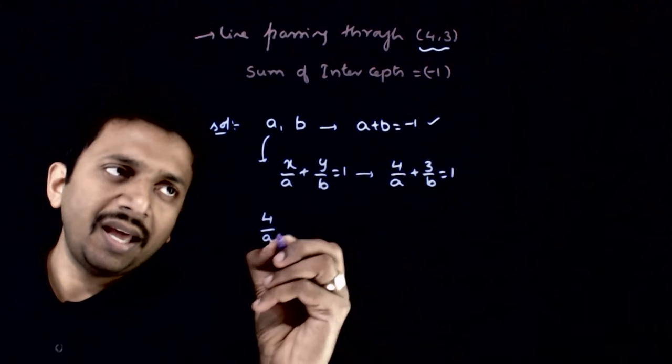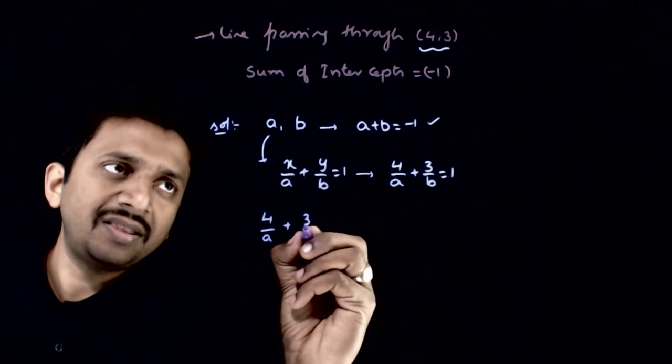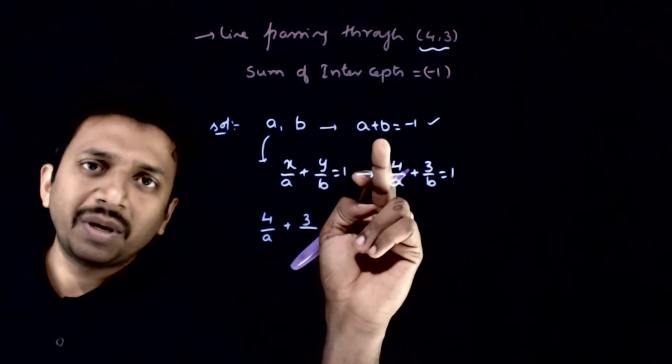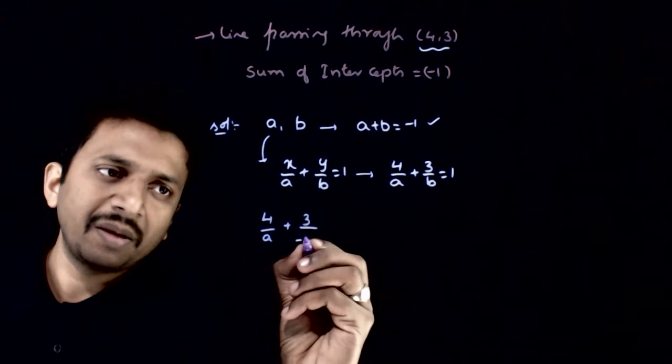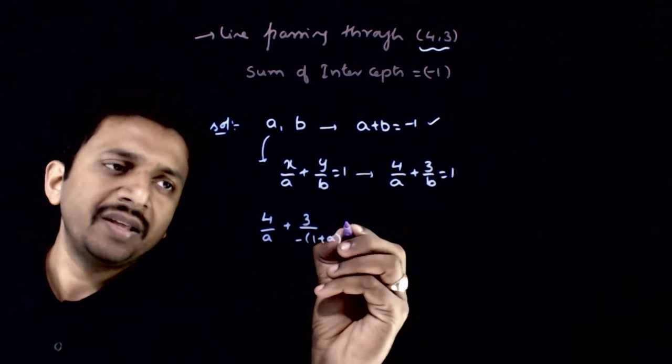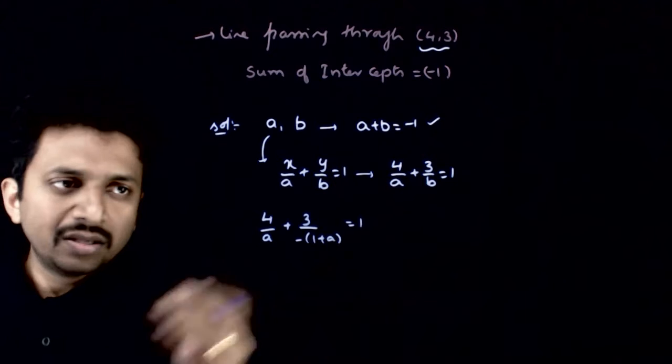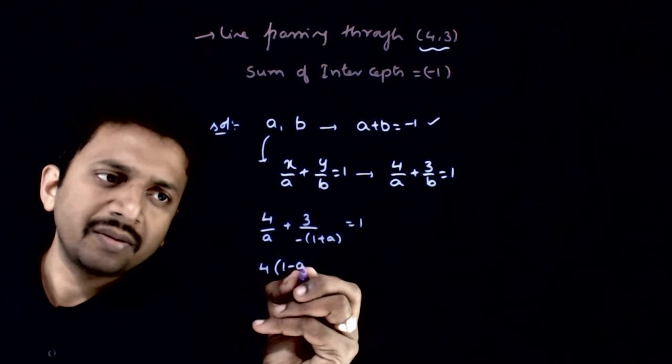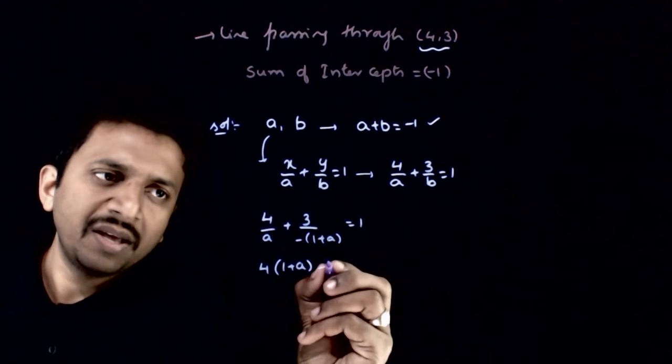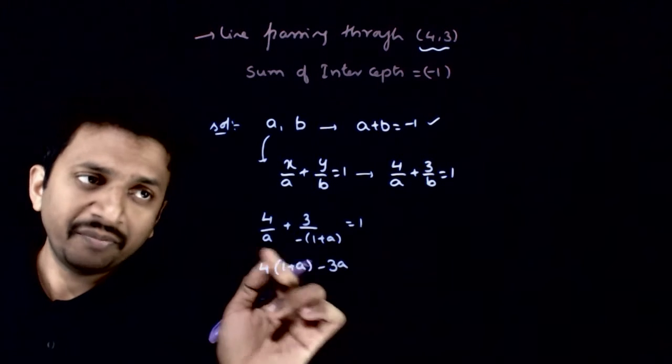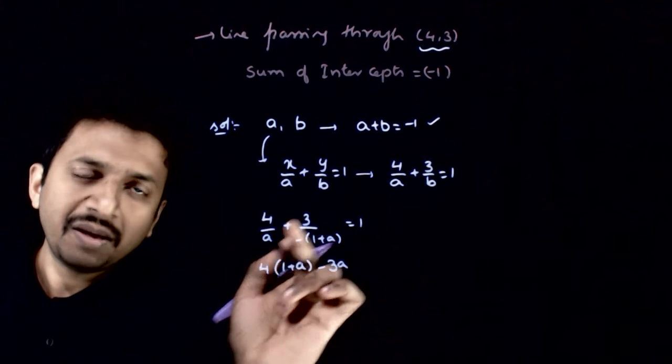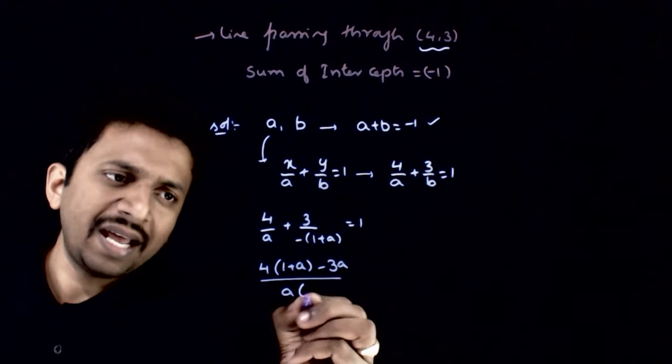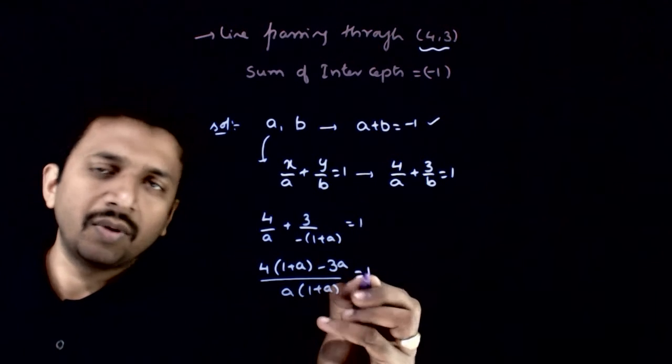4 by a plus 3 by b, substituting b equals minus 1 minus a. Taking the LCM: 4 times minus 1 plus a minus 3a by a times minus 1 plus a is equal to 1.